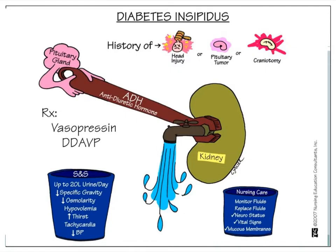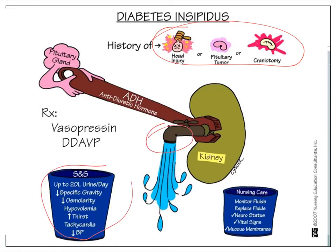This is a good visual summary slide for a patient with diabetes insipidus. Basically, the pituitary gland turns off antidiuretic hormone, which allows for water loss. The specific signs and symptoms the patient will present with initially include up to 20 liters of urine a day — that's excessive, excessive voiding with very clear urine that is not concentrated at all. That's why the specific gravity and osmolarity in the urine are low. The patient is hypovolemic and thirsty because they're losing water, and they get tachycardic with low blood pressure due to the loss of so much volume.